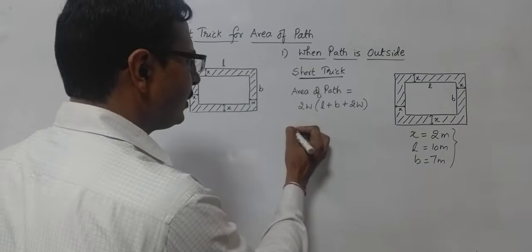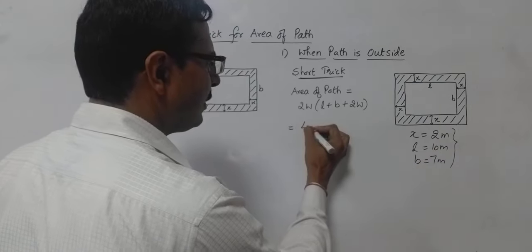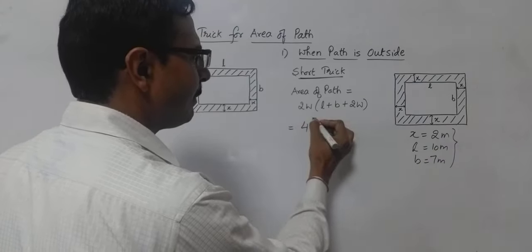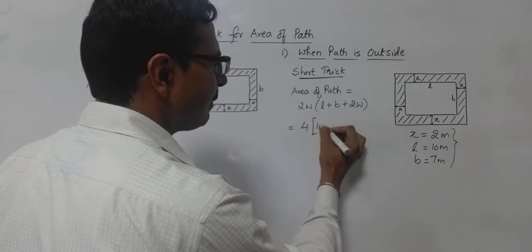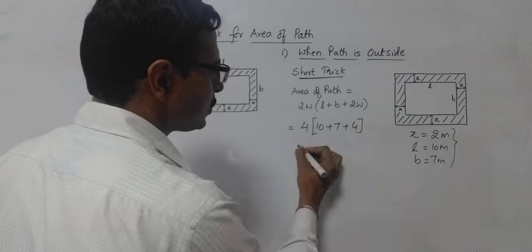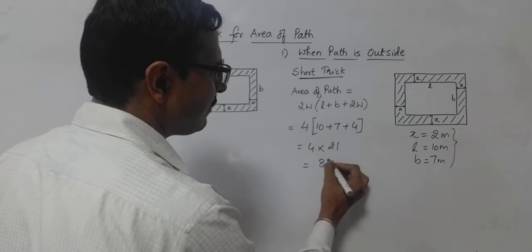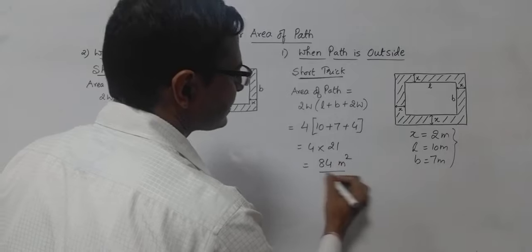Let's work out the area. It will be twice the width, width is 2, so this will be 4, twice the width multiplied by length 10 plus breadth 7 plus twice the width again, so that is 4. So 4 into this is 21, which is exactly 84 meters square. So that is the area of the path.